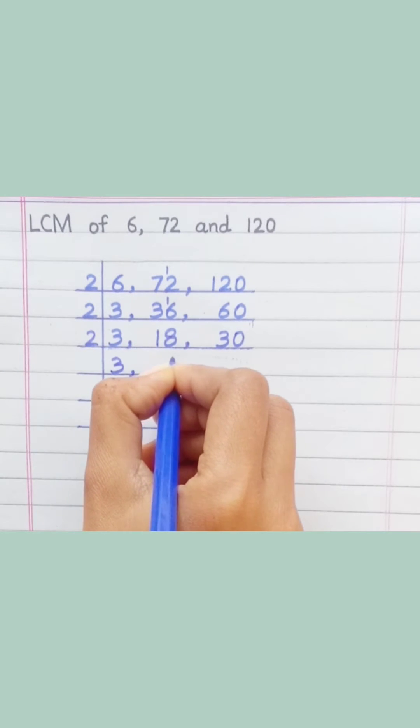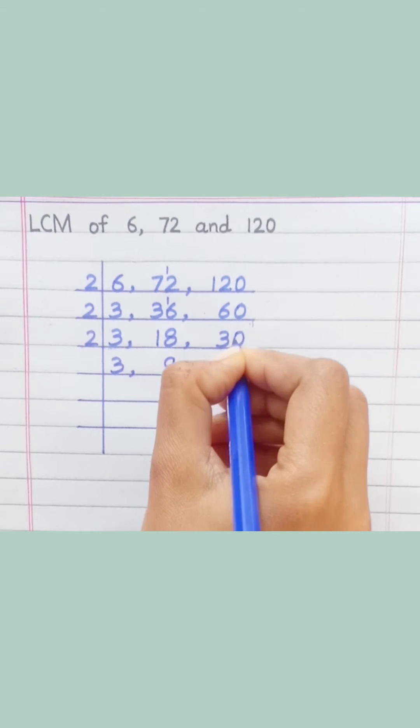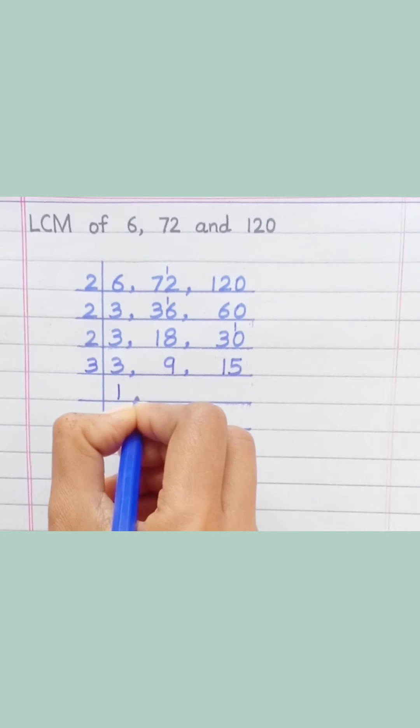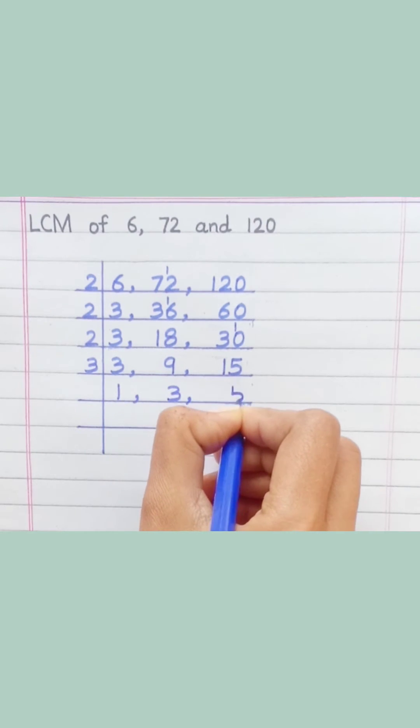2 9s are 18, 2 1s are 2, 2 5s are 10. 3 1s are 3, 3 3s are 9, 3 5s are 15.